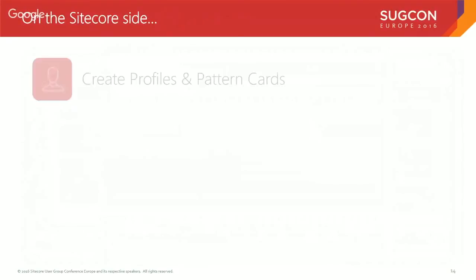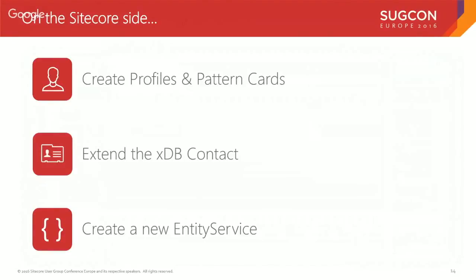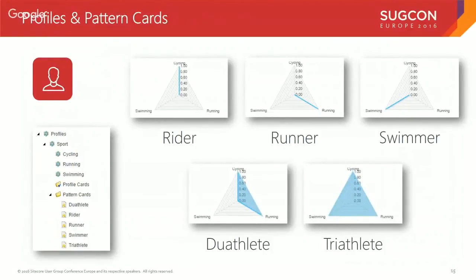On the Sitecore side, I created a profile and some pattern cards to match my three activities: cycling, running, and swimming. I extended the XDB contact to store this data, and I used the Sitecore Services Client to create an entity service to actually send this IoT device data to Sitecore. On the profile side, I created a profile called 'Sport' and then created the three sports as patterns: rider, runner, and swimmer.